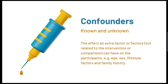A big problem related to cohort studies is confounders, which is the effect an extra factor or factors not related to the intervention or comparison can have on the participants. This could be factors such as age, sex, lifestyle factors and family history. It's important the researchers have procedures in place to handle both known and potentially unknown confounders and clearly indicate which data analysis process they have used.